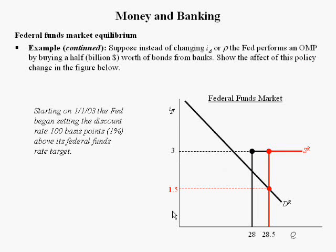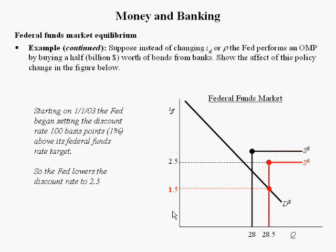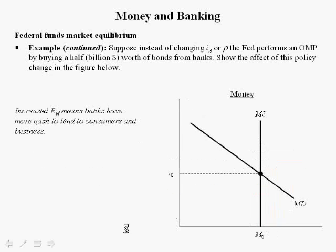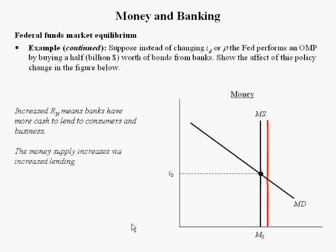Remember, starting in January of 2003, the Fed began setting the discount rate 100 basis points, or 1 percentage point, above its Federal Funds rate target. So the Fed's got to lower the supply curve — it moves it to the right and lowers it. Increased non-borrowed reserves means banks have more cash to lend to consumers and businesses, and the money supply increases via increased lending.